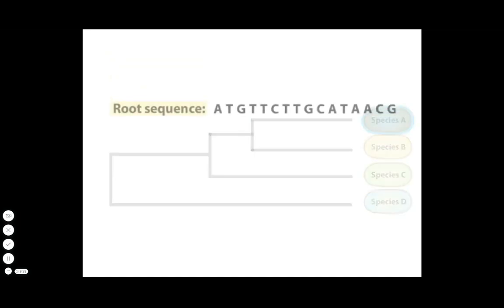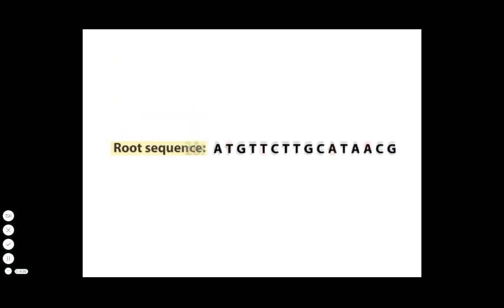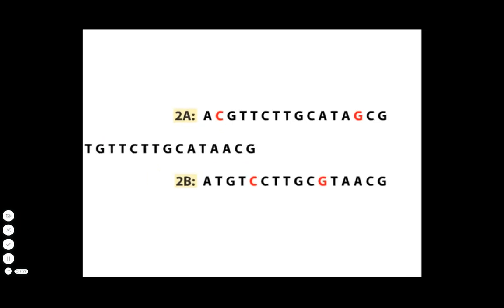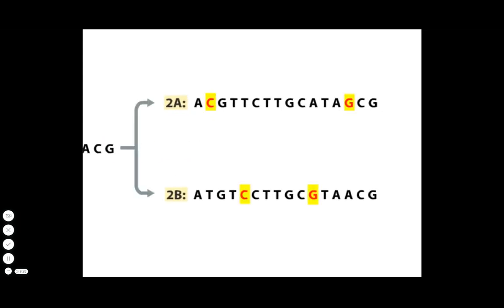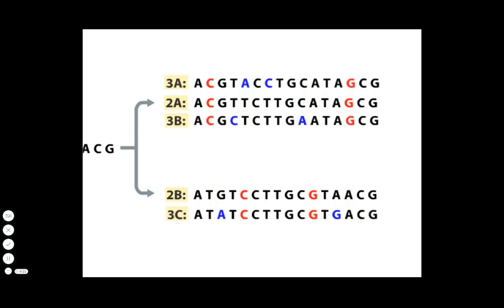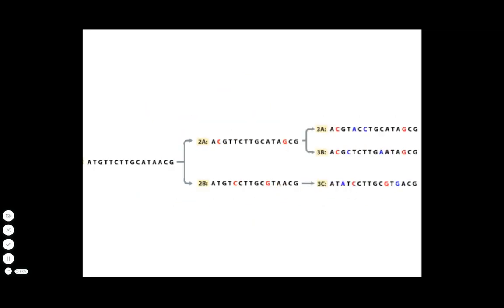Phylogeny can be measured based on changes in DNA sequence. As genetic molecules reproduce, they accumulate mutations randomly. In this example, each offspring in Generation 2 acquires two new mutations, such that their sequences differ by 25%. In the next generation, each individual propagates the earlier mutant sequences while acquiring two more random mutations. Strain 3C now differs by 50% from strains 3A and 3B, which differ by 25% from each other.